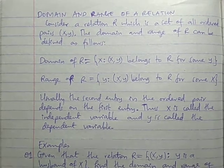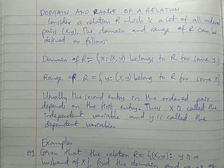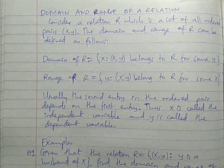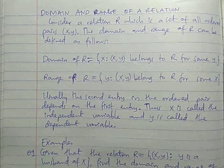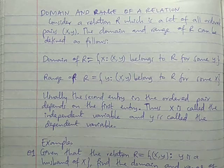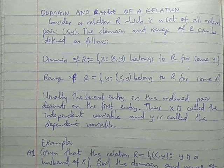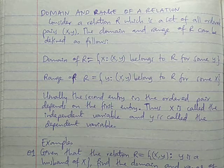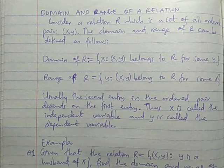In the previous session, we discussed pictorial presentation and touched a bit on domain and range of a relation. For any relation, the X value is the independent variable and Y is the dependent variable. Domain is all possible values of X, and all possible values of Y we call the range.